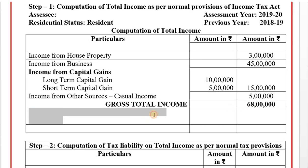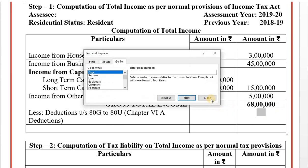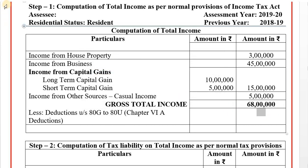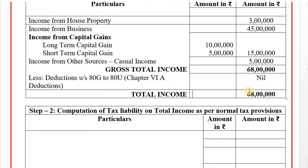Deductions under section 80G to 80U applicable to companies — deductions are nil. Therefore, total income is 68 lakhs. Step number 1 total income is 68 lakhs.